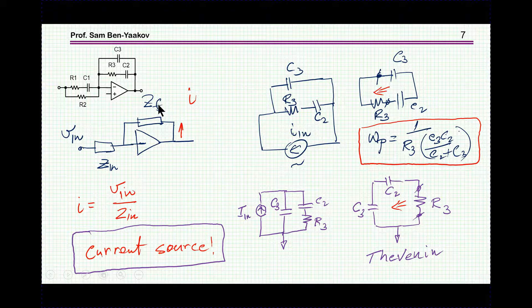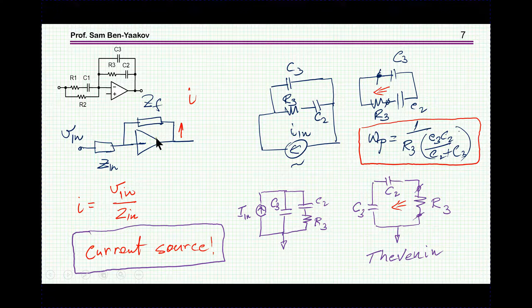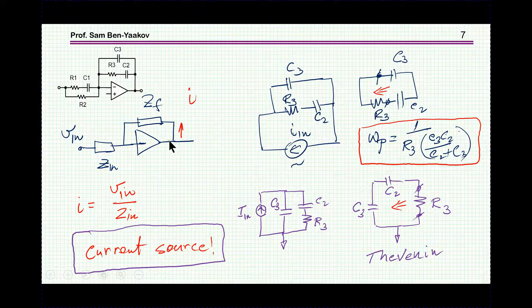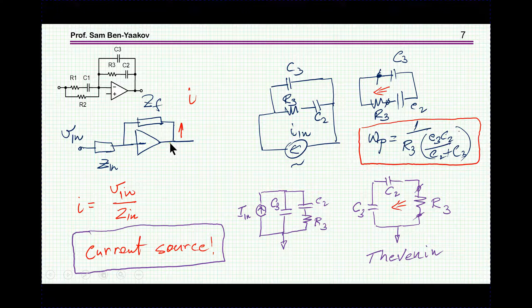So, we have a ZF, which is fed by a current source, it's not a voltage source. So, this is the equivalent circuit. We have a current source, we have this network here.